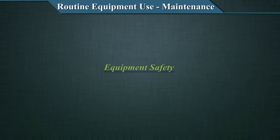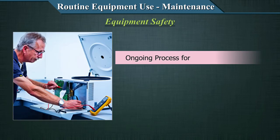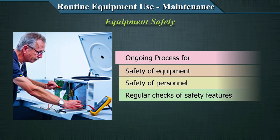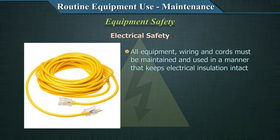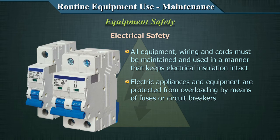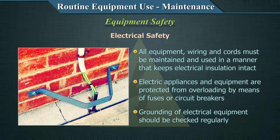After MQ, we come to another vital concept: equipment safety. This is an ongoing process to ensure the safety of both equipment and personnel, with all electrical and mechanical safety features regularly checked and maintained. For electrical safety, all equipment wiring and cords must be maintained with electrical insulation intact. Electrical appliances and equipment should be protected from overloading by fuses or circuit breakers. Grounding of electrical equipment should be checked regularly, as it protects equipment operators — if there is a fault, electricity flows into the ground rather than to the worker.